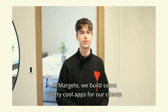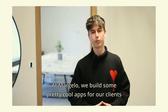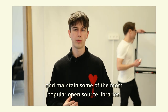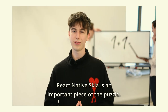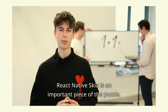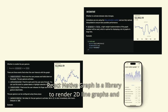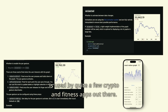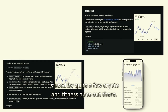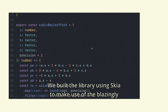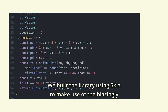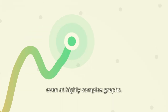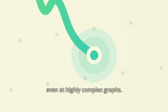I'm Marco, CEO of Marjolo. At Marjolo, we build some pretty cool apps for our clients and maintain some of the most popular open source libraries. React Native Skia is an important piece of the puzzle. React Native Graph is a library to render 2D line graphs, used by quite a few crypto and fitness apps. We built the library using Skia to make use of the blazingly fast rendering engine and provide a smooth user experience even at highly complex graphs.